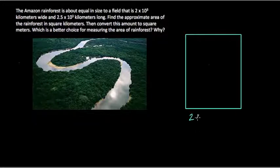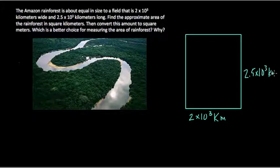So if we write this out, we get 2 times 10 to the 3rd kilometers and then we get 2.5 times 10 to the 3rd kilometers. So the area would be what? Well, 2 times 2 and a half is what? 2 times 2 is 4, times a half is 1. So that's 4 plus 1 or 5 times 10 to the 6th.